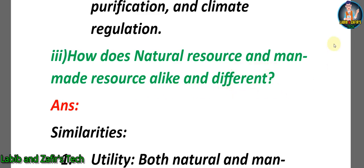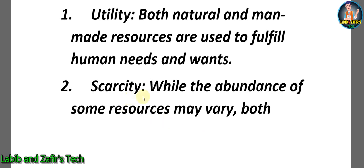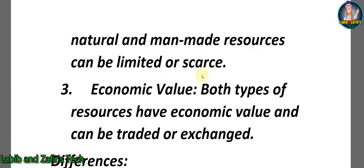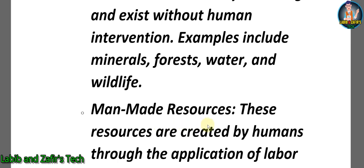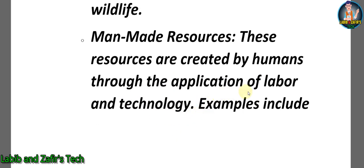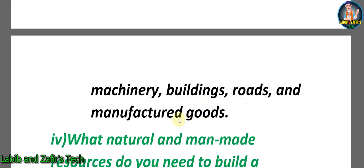Third descriptive question: How are natural and man-made resources alike and different? Similarities: 1) Utility — both are used to fulfill human needs and wants. 2) Scarcity — both can be limited or scarce. 3) Economic value — both have economic value and can be traded. Differences: Natural resources occur naturally without human intervention (e.g., minerals, forest, water, wildlife). Man-made resources are created by humans using labor and technology (e.g., machinery, buildings, roads, manufactured goods).